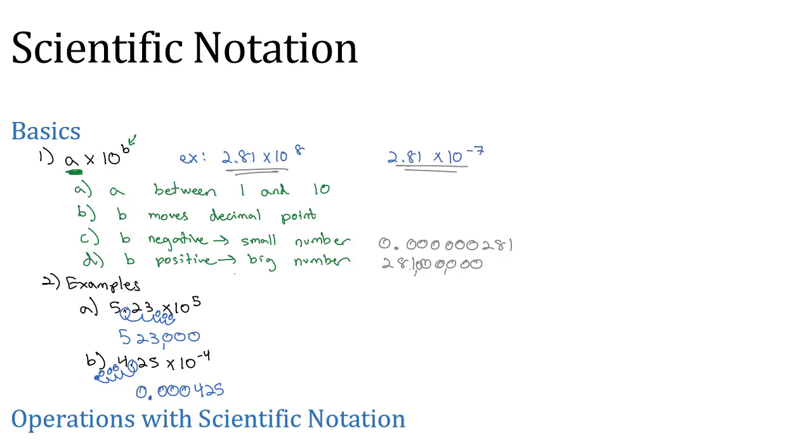We can also go the other way with scientific notation. I could give you a number, such as 81,500,000, and you could put it into scientific notation by taking the decimal point from where it is and moving it to after the first digit. How many times did we move it? One, two, three, four, five, six, seven places. So that's 8.15 times 10 to the seventh. And because 81,000,000 is a large number, I know that exponent has to be positive.